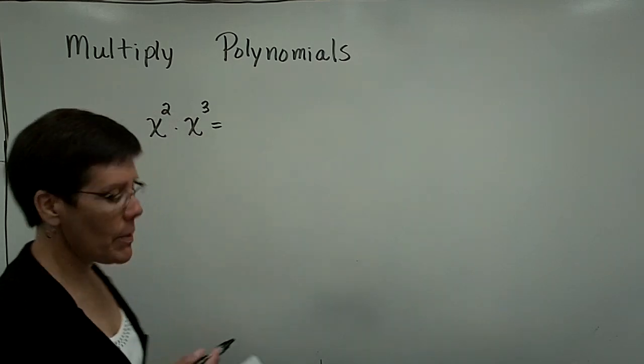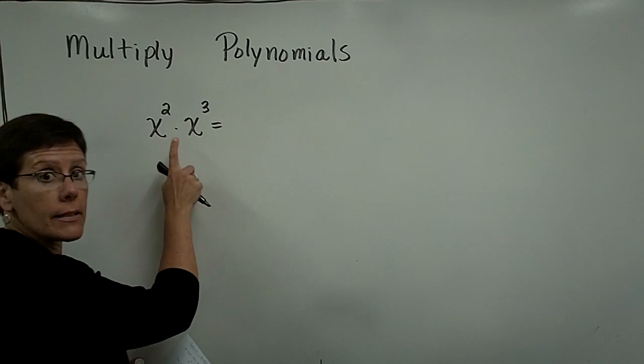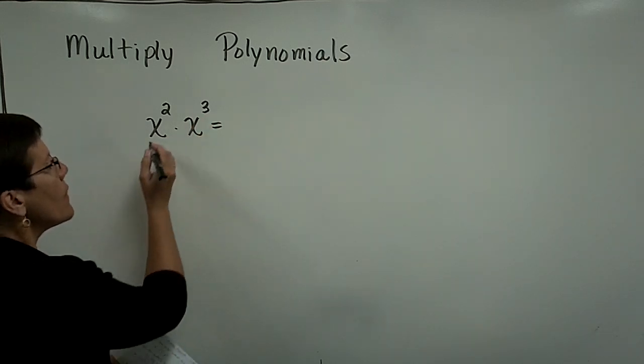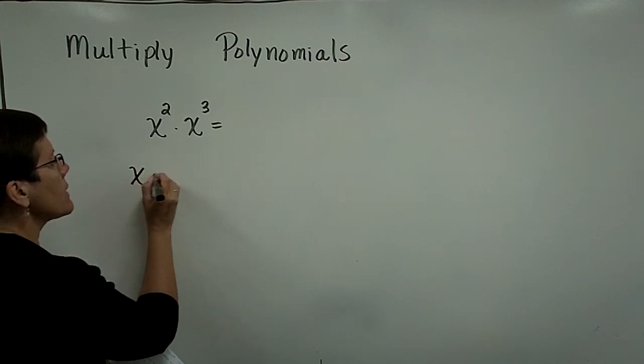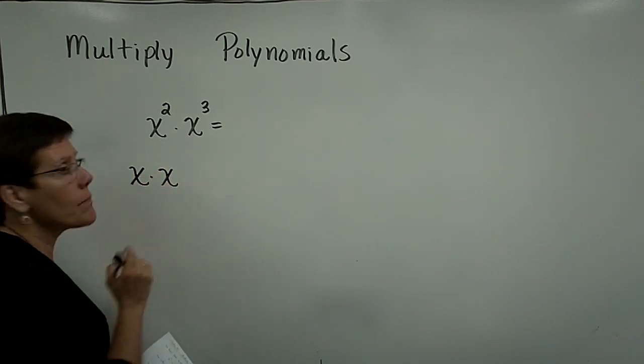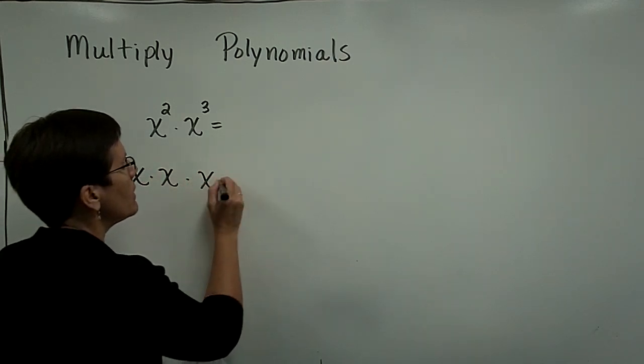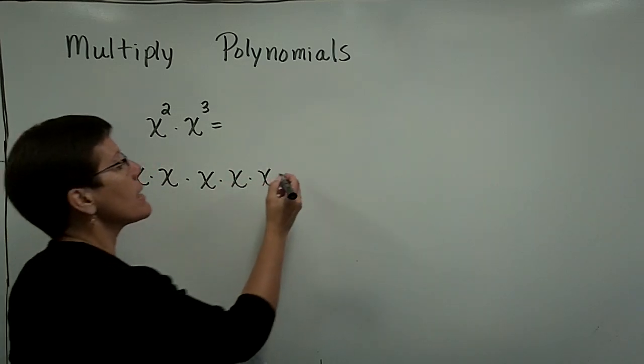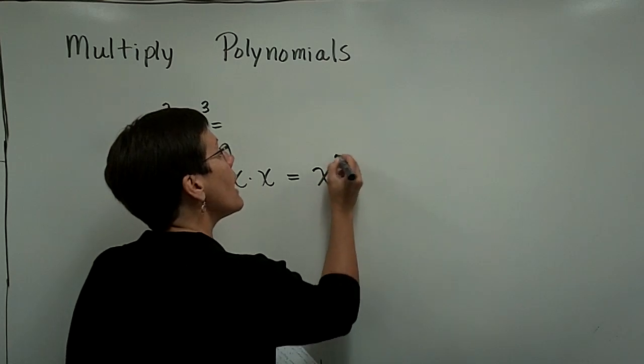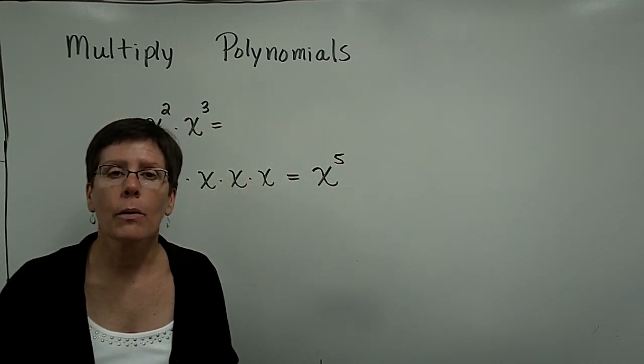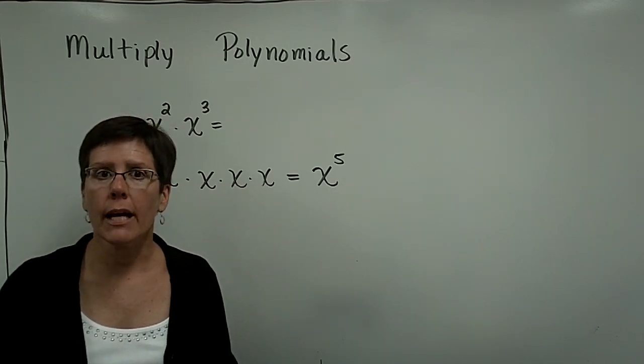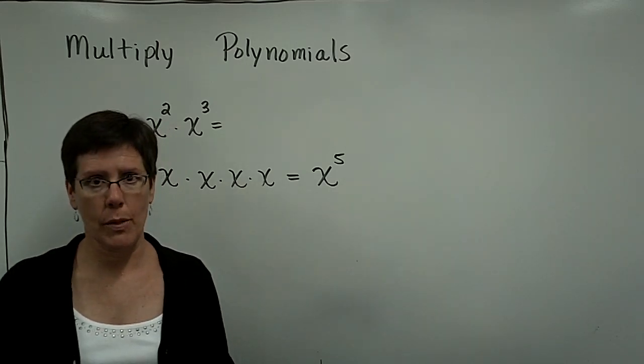In review though, I'd like to remind you that x to the second times x to the third is x to the fifth. That's because x to the second is this, x to the third is those three x's, and when I put that back into shorthand form, I have to write that as x to the fifth power. So please remember that when you multiply, if the bases are alike, you add their exponents.